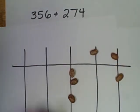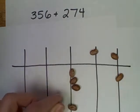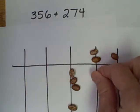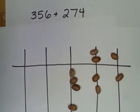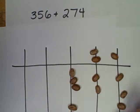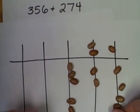Plus 274. Two hundreds, seventy is fifty, sixty, seventy. Four. One, two, three, four. And now what I'll do is I'll look at my groupings.